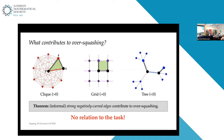Negatively curved edges contribute to over-squashing. Knowing this, we can cure the graph by adding edges with higher curvature, eliminating problematic edges and improving the flow of information. We show this improves learning on graphs in both homophilic and heterophilic cases. The limitation is that this only accounts for the architecture and graph structure — not the task. It doesn't tell us anything about what kind of functions the neural network is trying to implement.